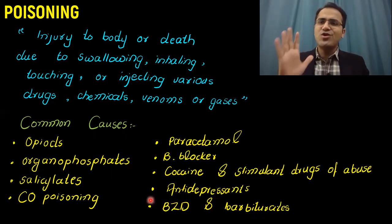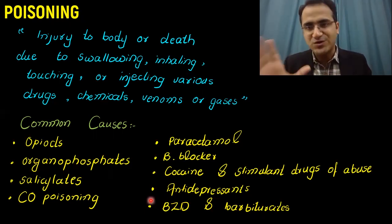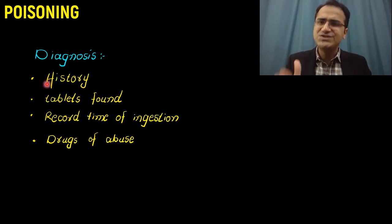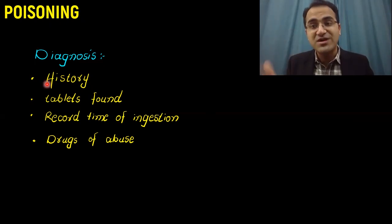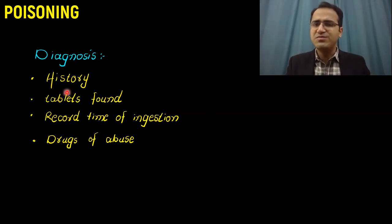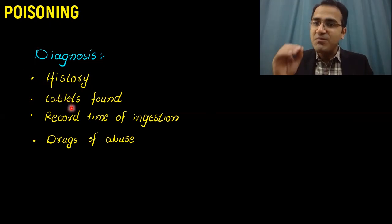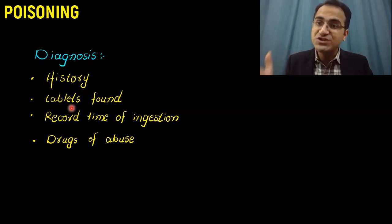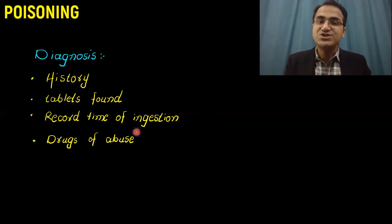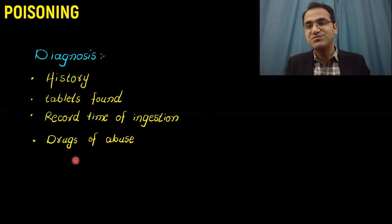We'll discuss each one in detail with their treatments in our toxicology series. In the diagnosis of poisoning, history is very important. If the patient is conscious, take history from the patient; if unconscious, take history from relatives or attendants. Look for any tablets found with the patient and take the medication history of what the patient was taking chronically. Record the time of ingestion and the time of presentation to hospital, and look for any drug of abuse.